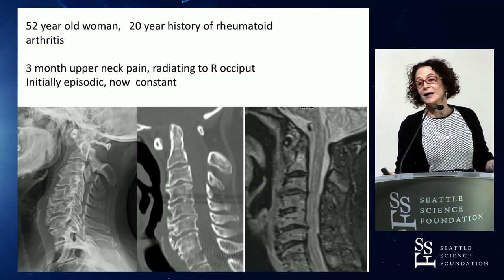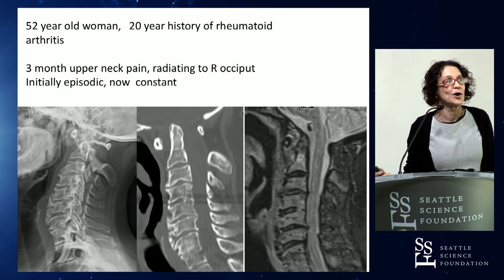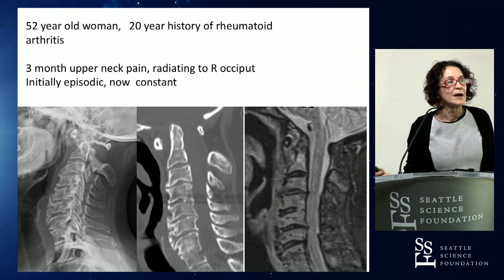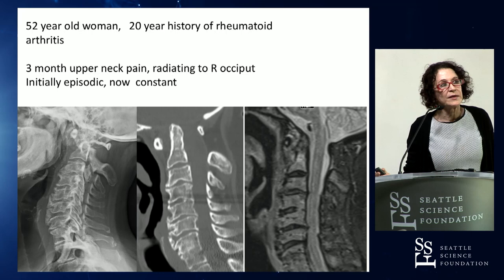The first case is a 52-year-old woman with a 20-year history of RA. She came in with three months of upper neck pain radiating to the right occiput - it was episodic, then became constant. She has an X-ray, a CT, and an MR. The X-ray is not particularly helpful except to confirm nothing has subluxed when she's vertical. What she has is atlantoaxial subluxation, which is one of the things you can see in late-stage rheumatoid arthritis. When you look at the MR, it's not all that clear.